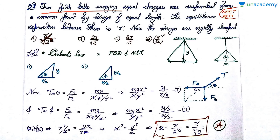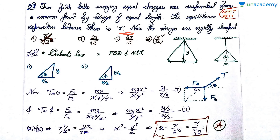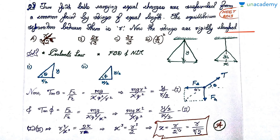Two pitballs carrying equal charges are suspended from a common point by strings of equal length. The equilibrium separation between them is R. Now the strings are rigidly clamped at a point where the height is halved to y/2. You need to find the new equilibrium separation. The options are: A) R divided by cube root of 2, B) 2R by root 3, C) 2R by 3, and D) R by root 2 squared. Pause and attempt the question.